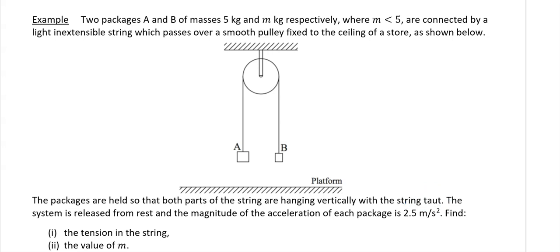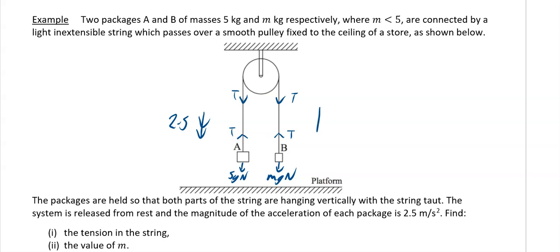Find the tension in the string. Package A has 5g acting downwards and package B has Mg downwards, each with tension T upwards. Since 5 kilograms is the heavier, it accelerates downwards at 2.5 meters per second squared, while B accelerates upwards at 2.5 meters per second squared.